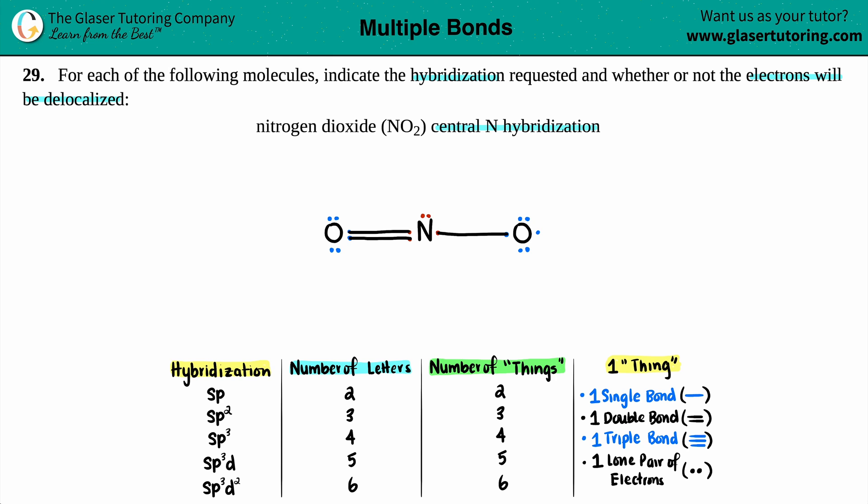Let's see what nitrogen has. The nitrogen has a single bond so that's one thing. I see a double bond, I'm going to group that all together, that's one thing. And a lone pair. I can't use these lone pairs because they're not bound to the nitrogen. So this nitrogen has three things, and three things, three letters, sp2. So this would be sp2 hybridized.